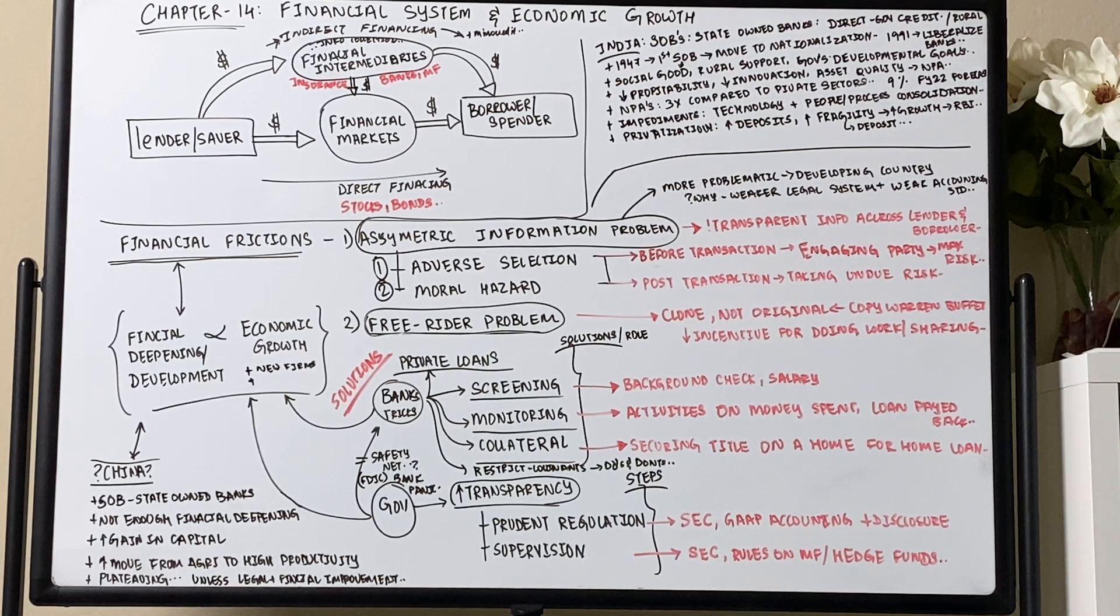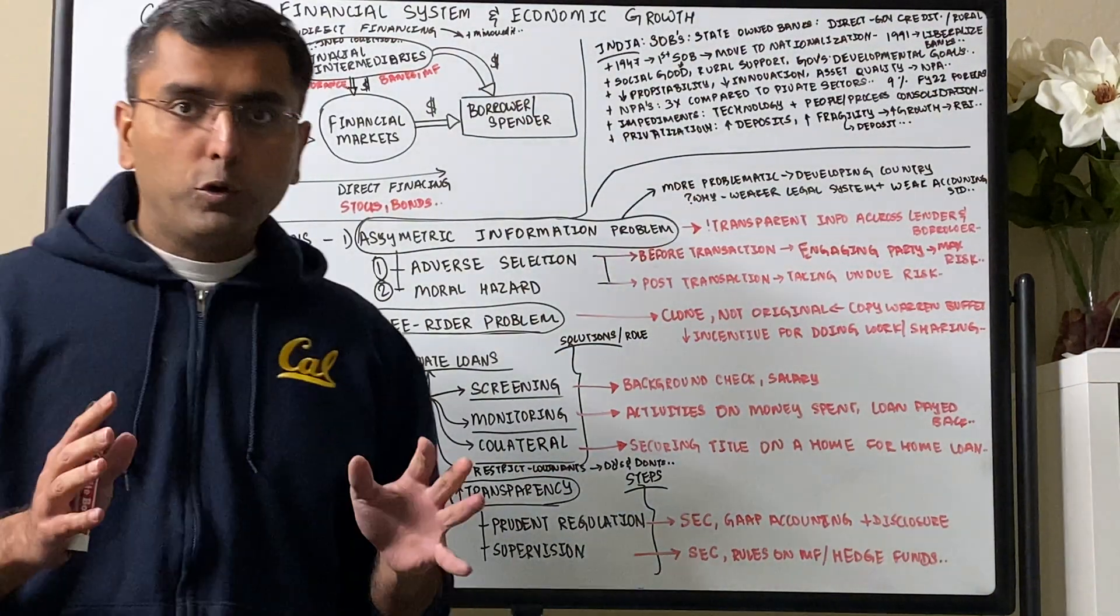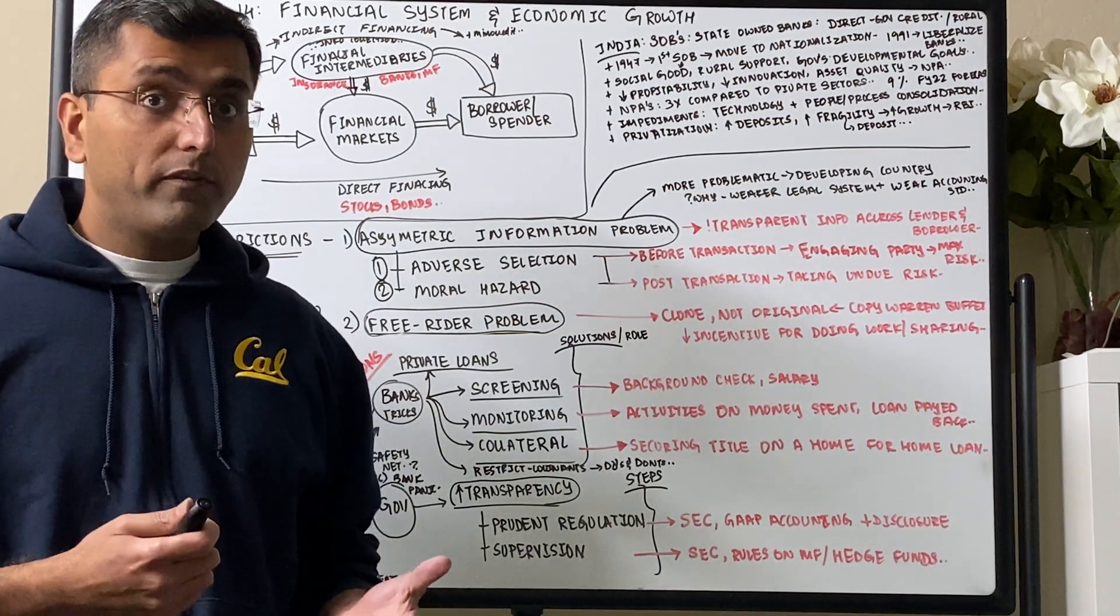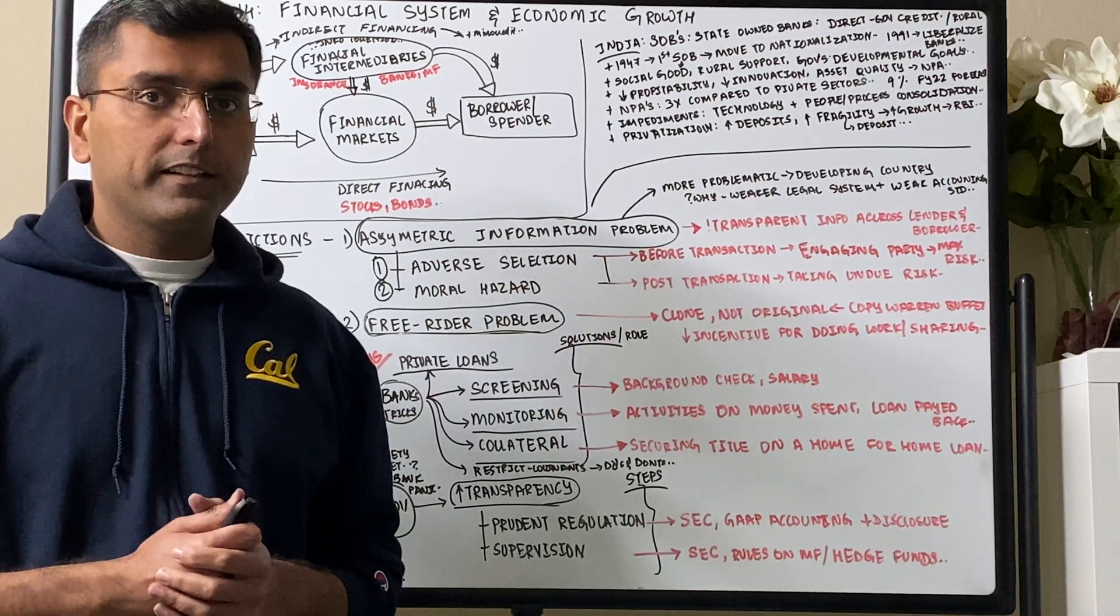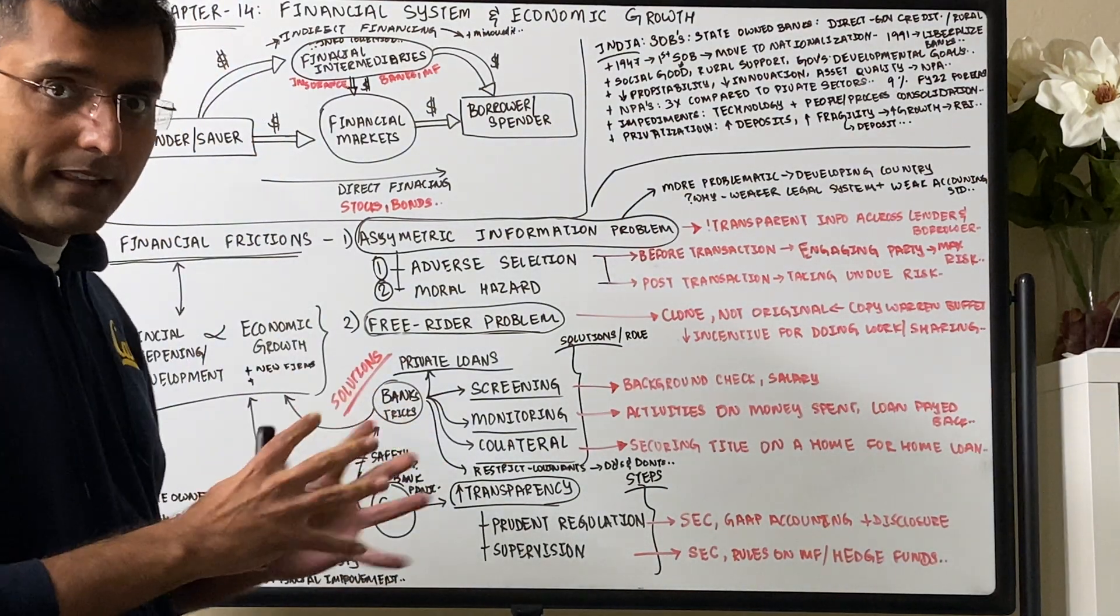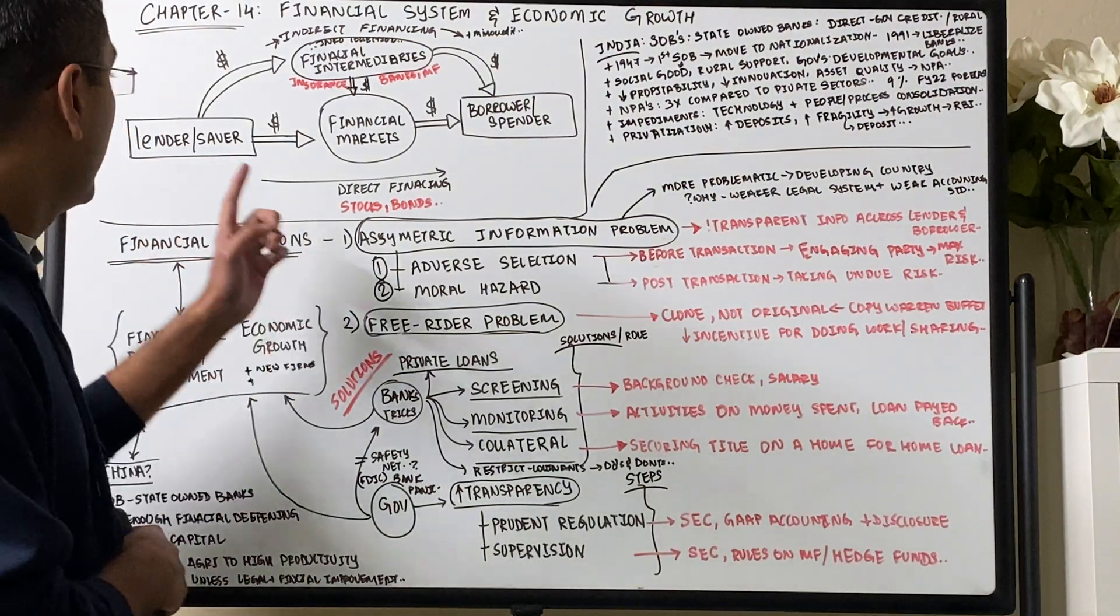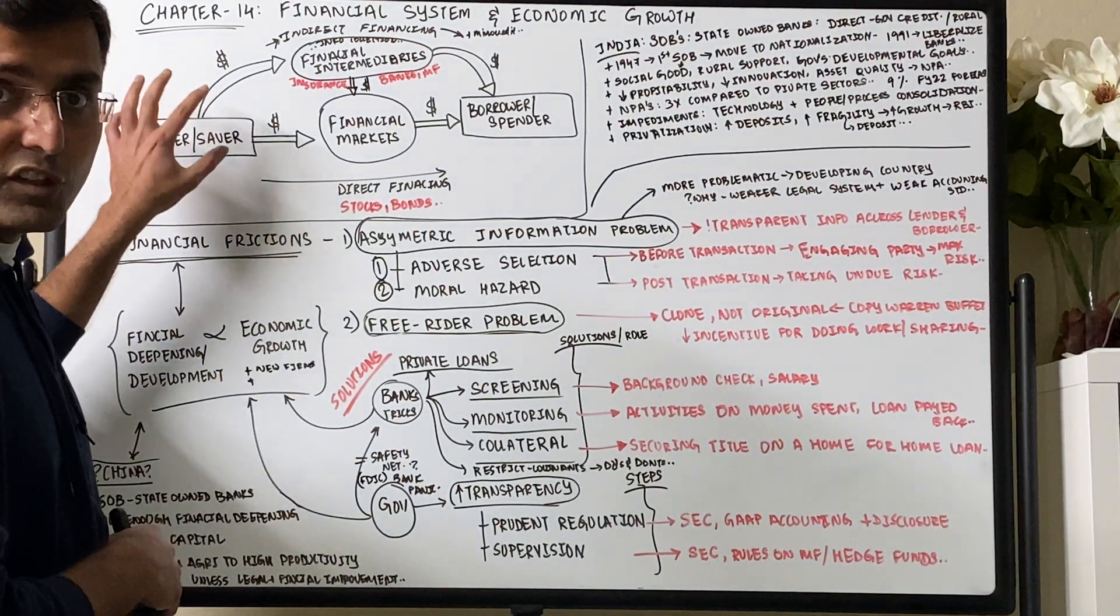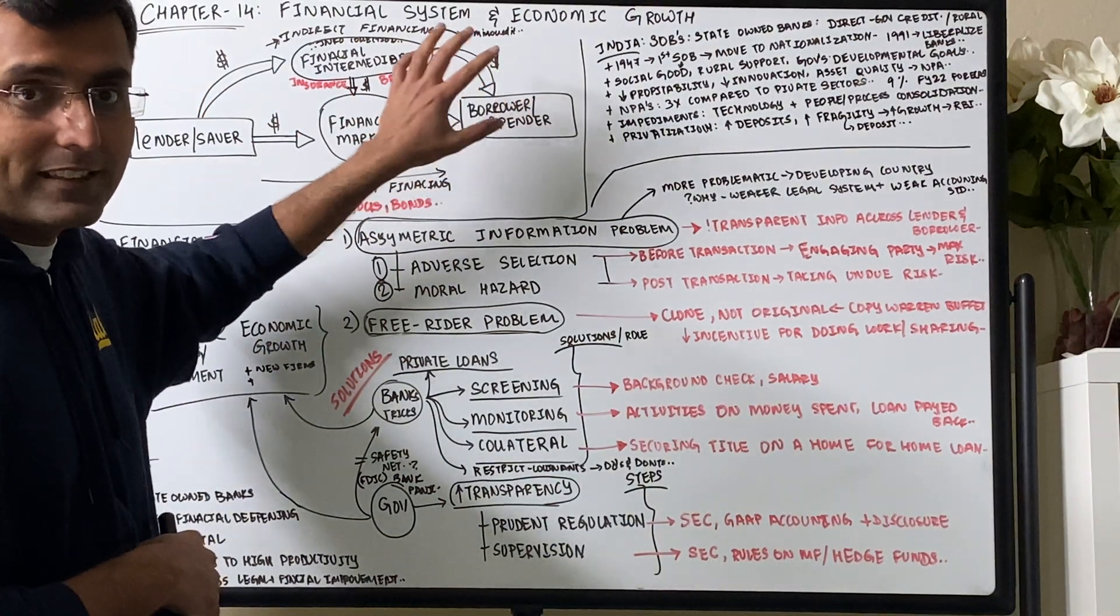Chapter 14: Financial System and Economic Growth. What is the role of financial systems like banks, insurance companies, mutual funds, and the stock market in the economic growth of the country? This chapter is all about that. There are two ways for financing and two parties: the lender or saver, the person who has the money, and the borrower or spender, who has a great idea.